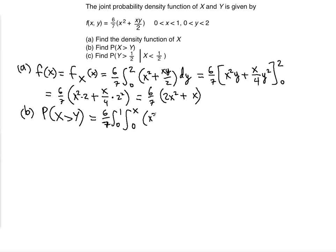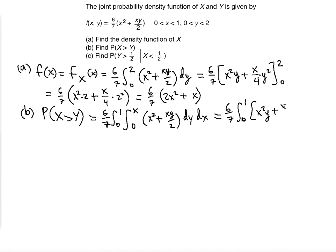So we have (6/7) times the integral from 0 to 1 of the integral from 0 to x of (x² + xy/2) dy dx. The inner integral evaluates to x²y + xy²/4, evaluated from 0 to x. Substituting y = x, we get x³ + x³/4. This gives (6/7) times the integral from 0 to 1 of (x³ + x³/4) dx.